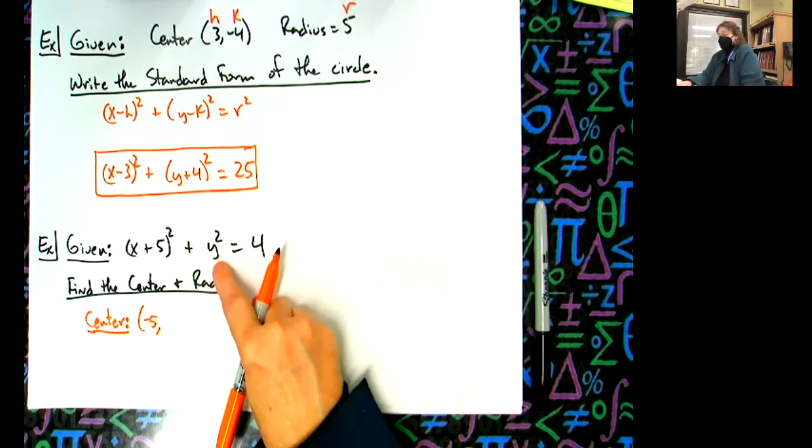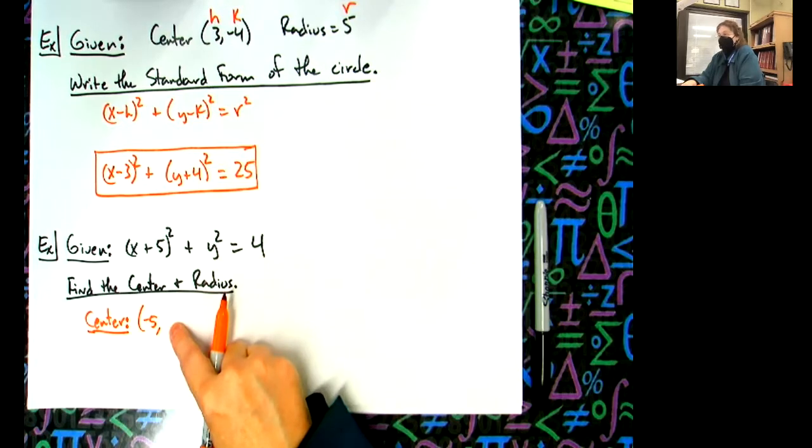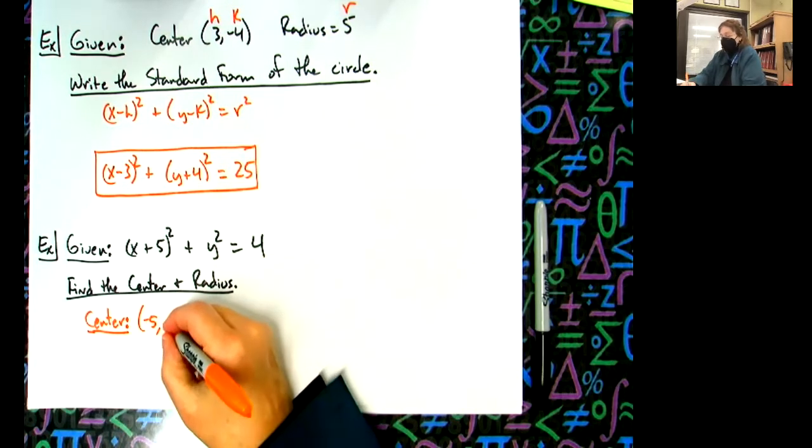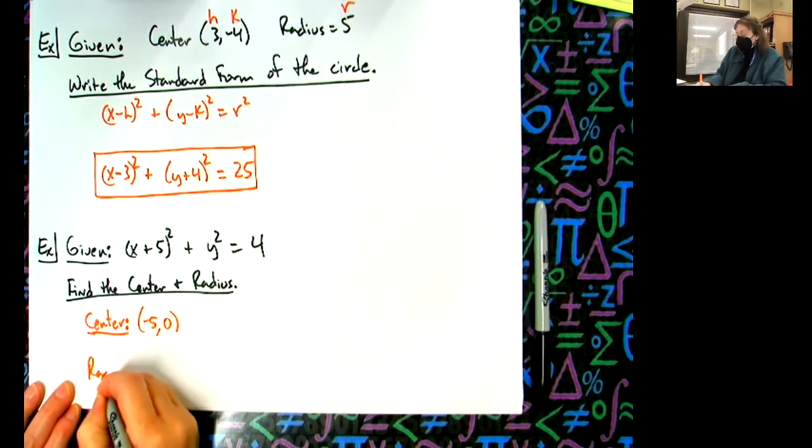Now is there a k? There is no k. So if there is no k, what number do I put here? Zero.